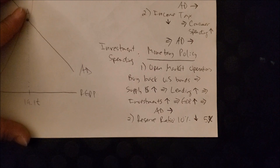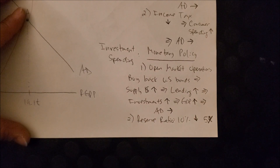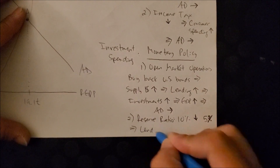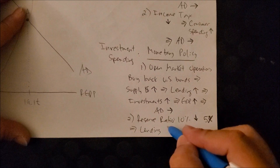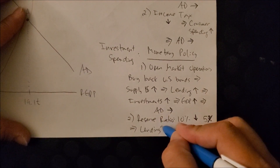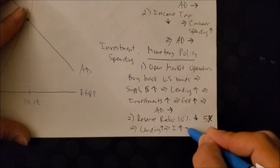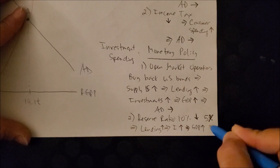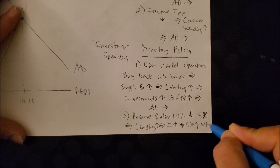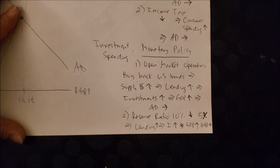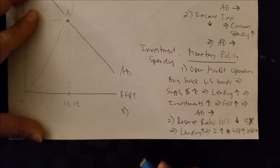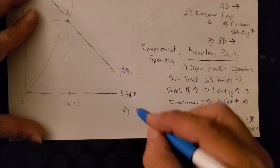When the reserve ratio is lowered to 5%, you no longer need to keep $10 in reserve — only $5. That frees up an extra $5 to lend to entrepreneurs, investors, or consumers. As lending increases, investments increase, GDP increases, and AD shifts to the right — all through the lowering of the reserve ratio.